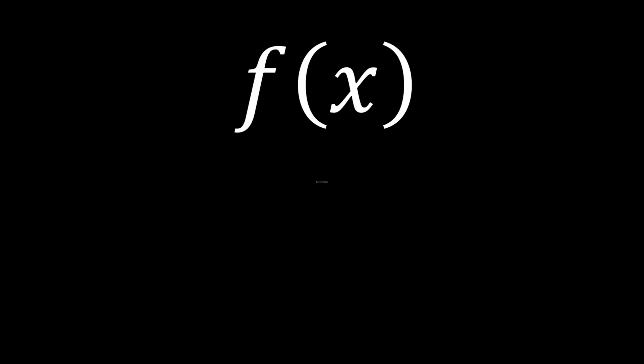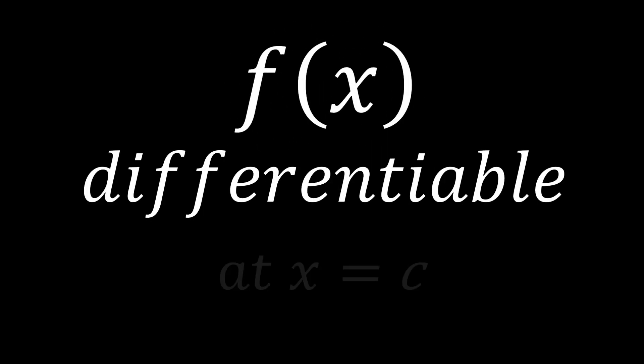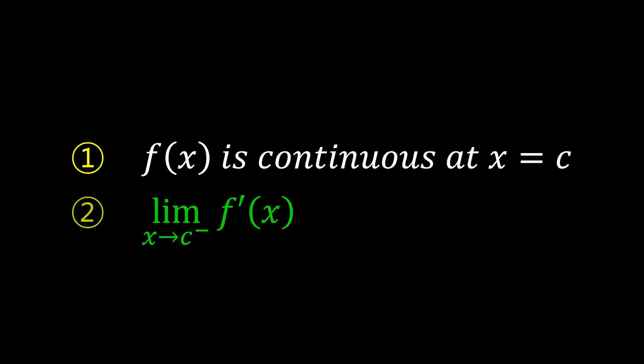In order for function f to be differentiable at point c, it needs to satisfy two conditions. First, f must be continuous at x equals c. Second, the values of the left-hand and the right-hand limits of f prime must be equal. This means that the slopes of f as x approaches c from the left and from the right must be exactly the same.